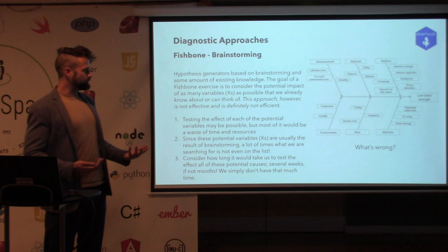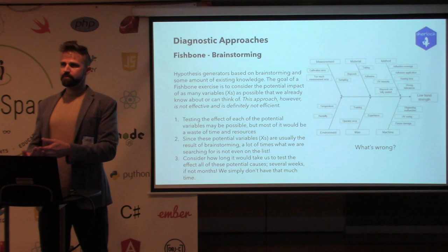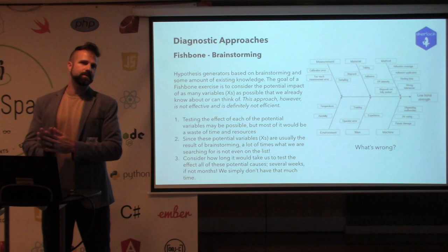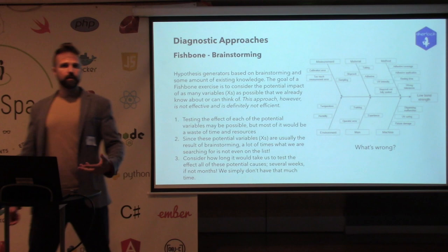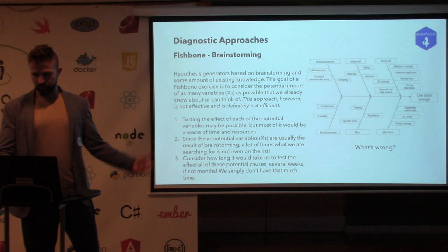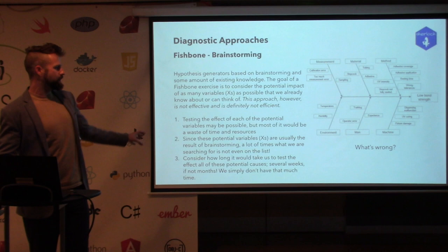Another problem is that the actual x's driving variation might not even be on your brainstorm list. And in a crisis situation you just don't have a year to work through all those possibilities. For tough manufacturing problems, this kind of brainstorming is a no-go. For problems involving humans — like food safety — it might be decent, but not for physics-based manufacturing problems.